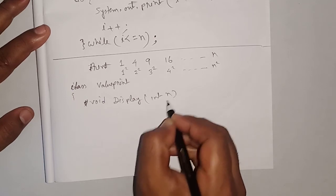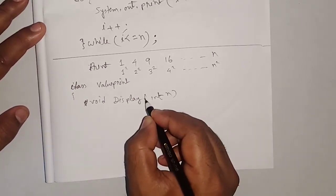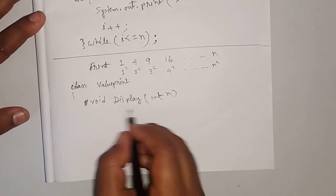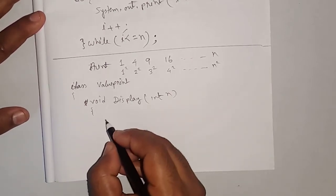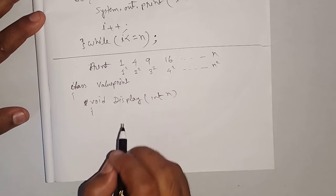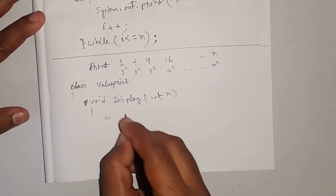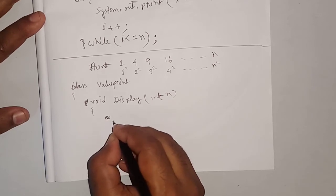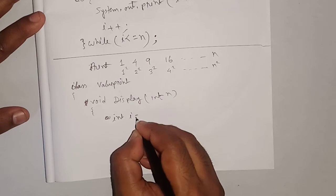int n is called a parameter — it is written inside the bracket when you are defining a method, we call it a parameter. Then I am using while loop. int i is equal to 1.